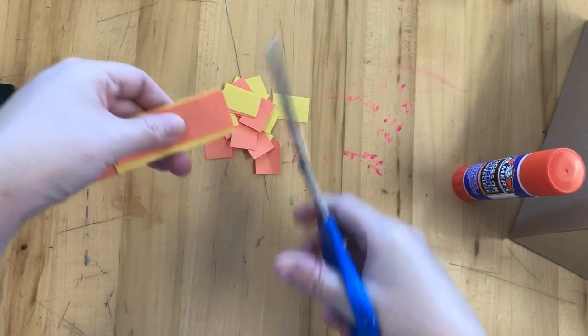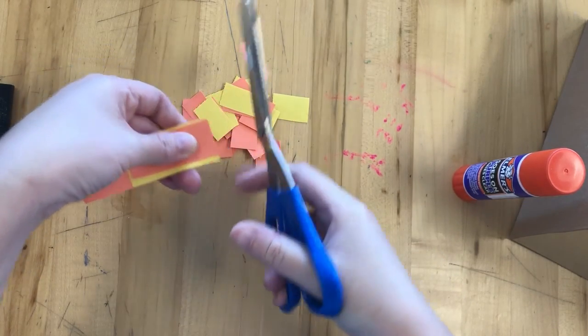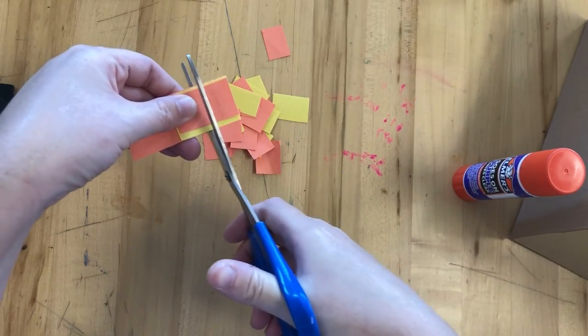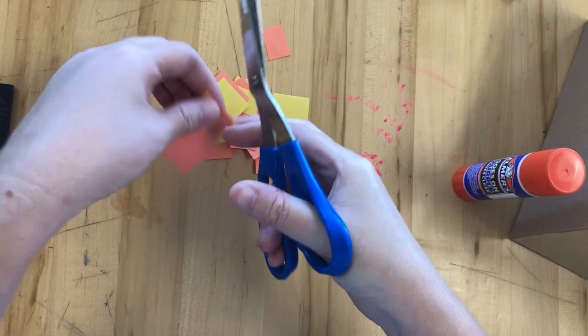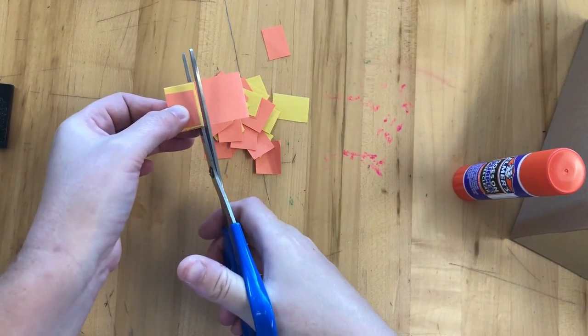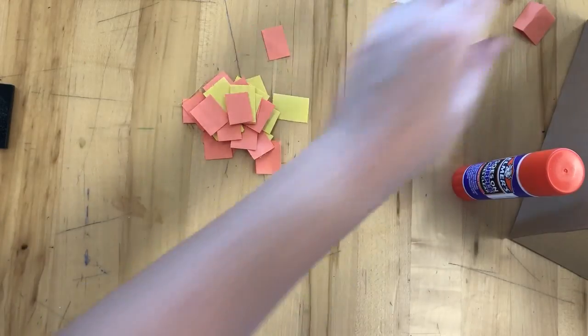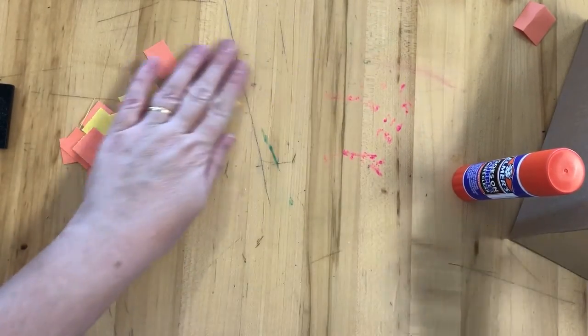What we're going to do is glue these bricks onto the front of our toy shop. Now try and glue them in straight rows rather than higgledy-piggledy. I'll show you what I mean in a moment. So those are my bricks already pre-cut.